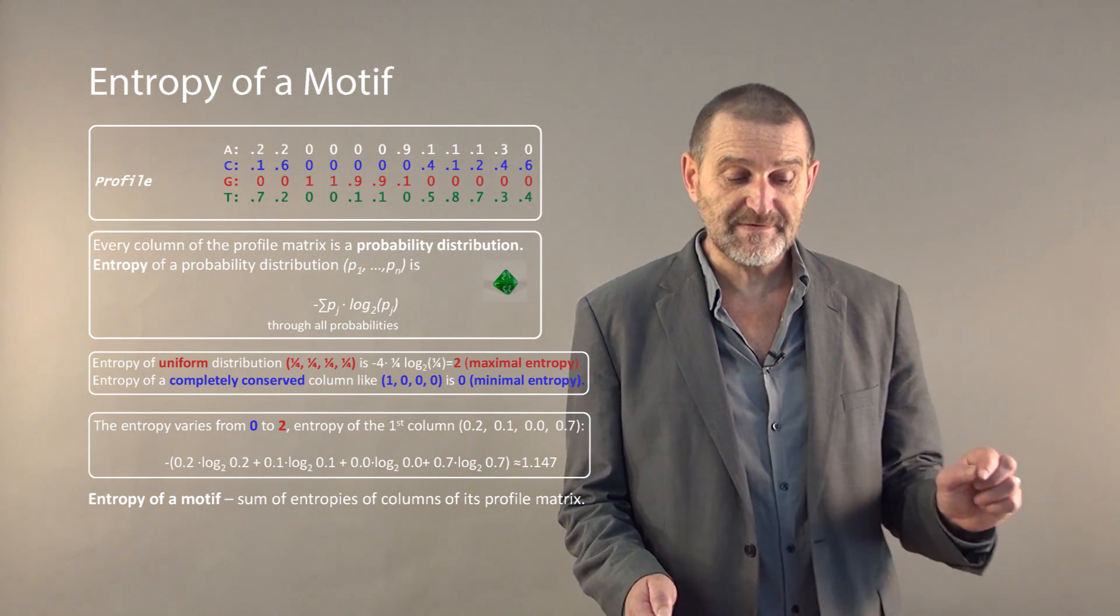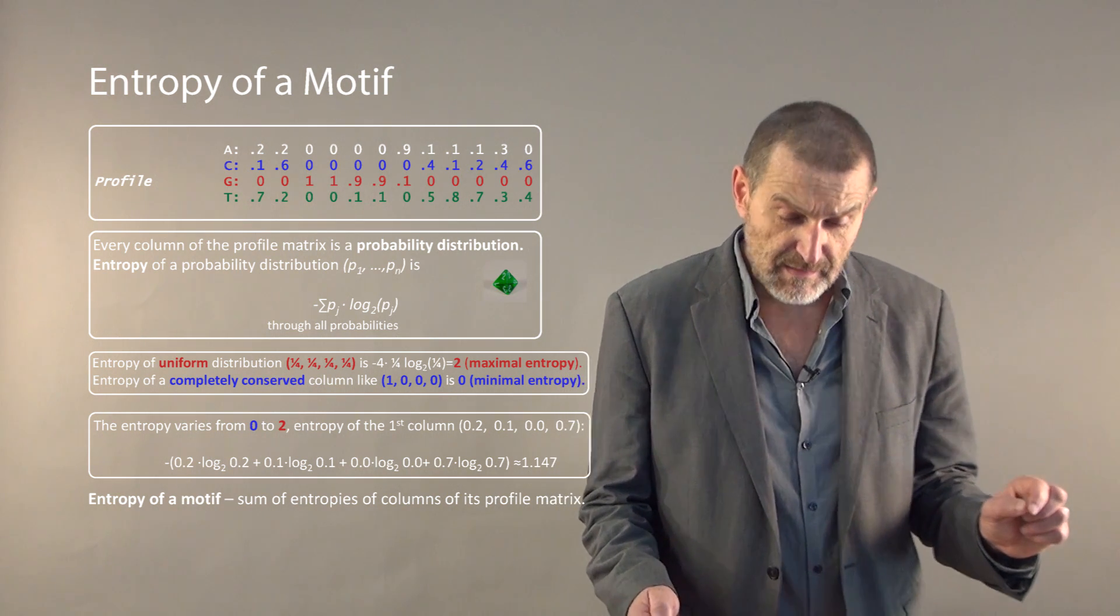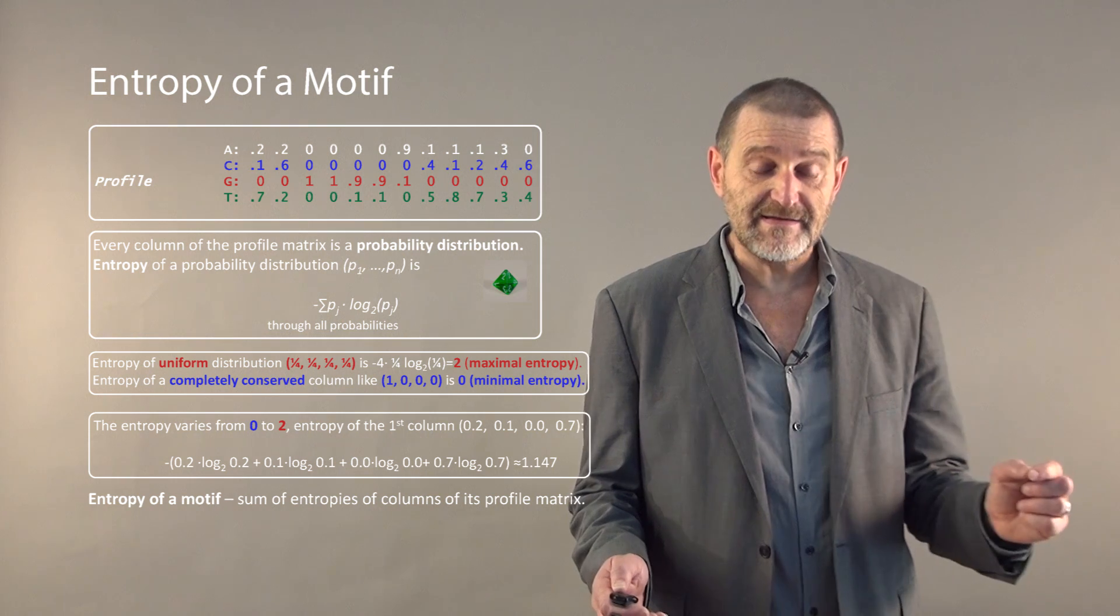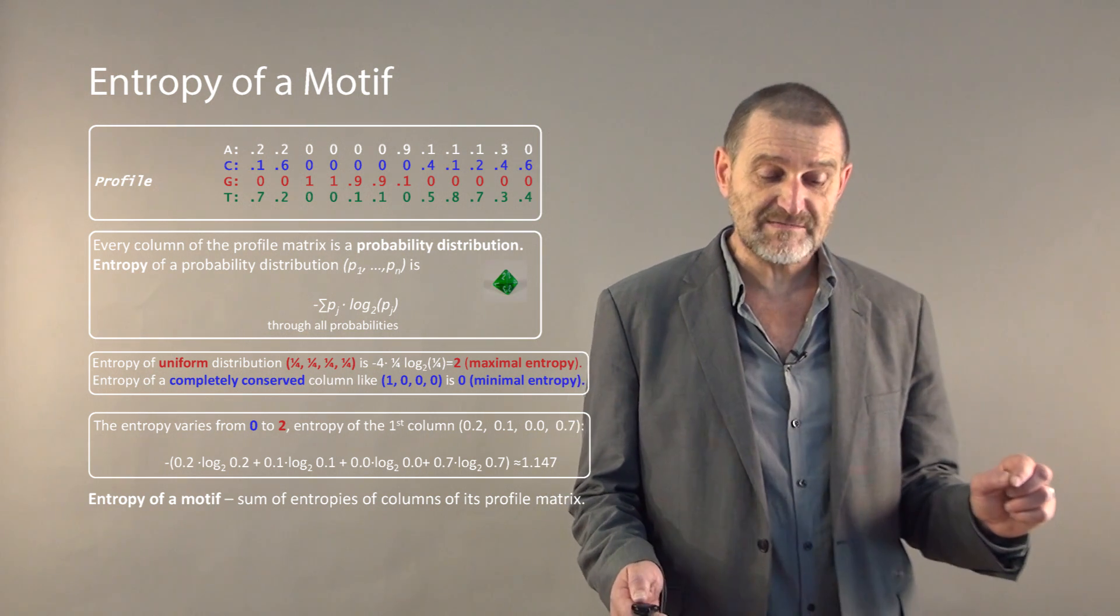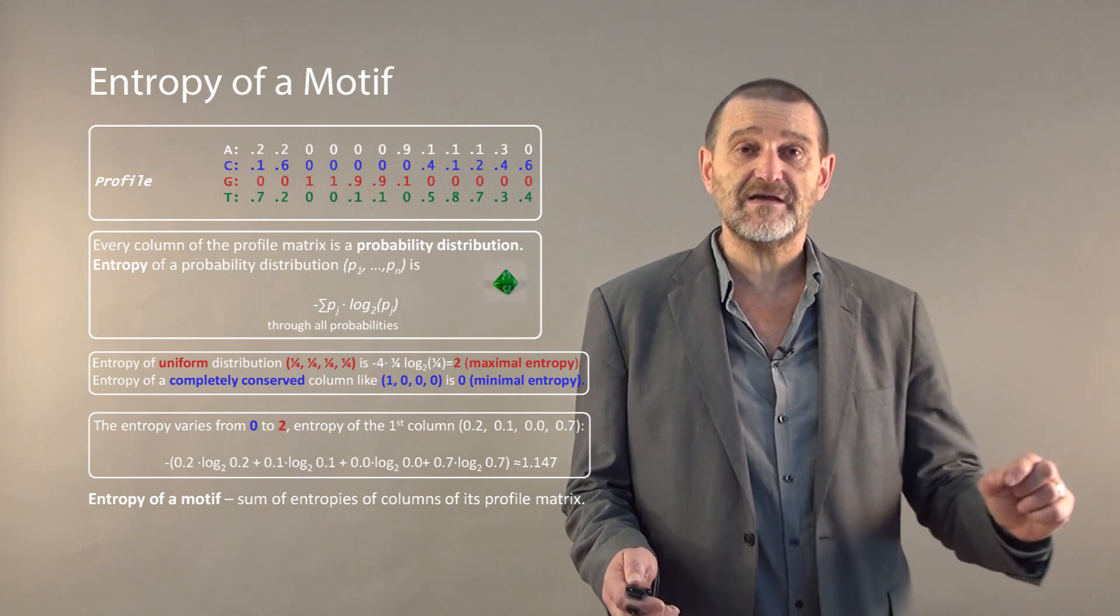For example, we can compute the entropy of the first column and it will be 1.147. We can compare it with minimal possible entropy, which corresponds to an extremely conserved motif where all symbols in the column are the same.